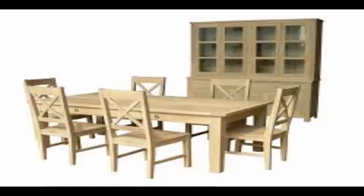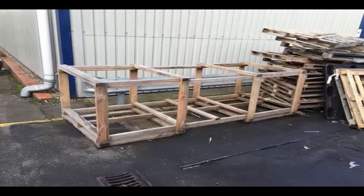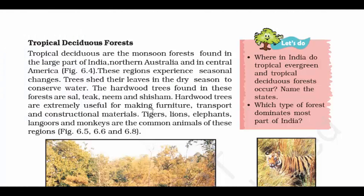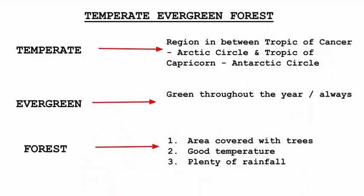These hardwood trees are extremely useful for making furniture, transport, and construction materials. Animals found in tropical deciduous forests include tigers, lions, elephants, langoors, and monkeys. Think of it this way: this is a dry sort of forest, and these animals like dry areas — they don't want to get wet like in tropical evergreen forests where there is plenty of rainfall. That's a helpful way to remember it.